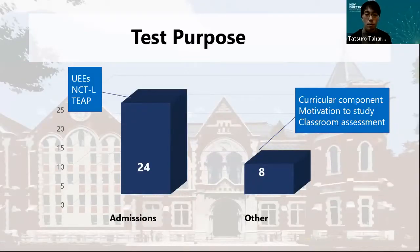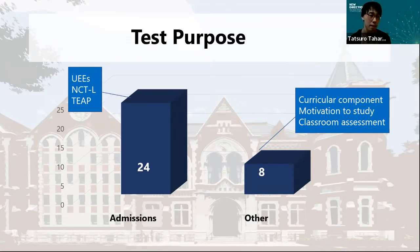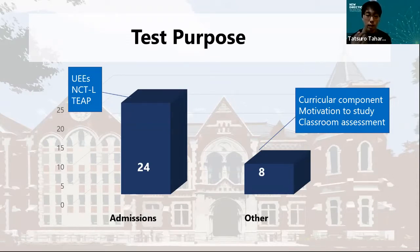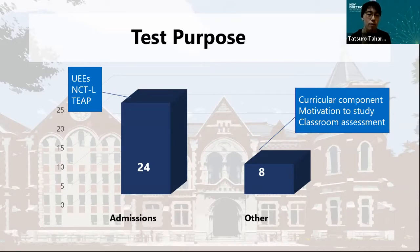For test purposes, most studies focus on tests primarily for admission purposes, including the university entrance exam, the National Center Test (NCT), the National Center Test Listening component (NCTL), and the Test of English for Academic Purposes (TEAP) administered by the AIKEN Foundation in Japan. The NCT is a standardized test used mainly by public and some private universities in Japan. The NCTL was introduced in 2006 to create positive washback on the learning and teaching of listening within formal school education.